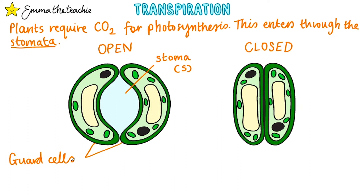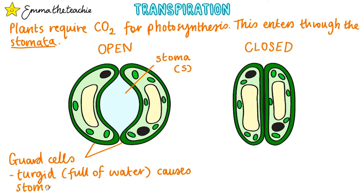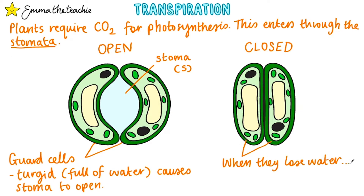In this diagram, the guard cells are turgid. That means they're full of water, and this gives them a particular shape that causes the stoma to open. When the guard cells lose water, they become flaccid and their shape becomes more rectangular, which closes the stoma.